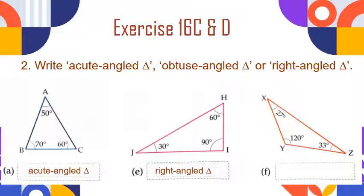Now let us come to the third figure. In this triangle, two angles are equal to 27 degrees and 33 degrees, and one angle is equal to 120 degrees. A triangle in which two angles are acute but one angle is an obtuse angle is called an obtuse angle triangle.